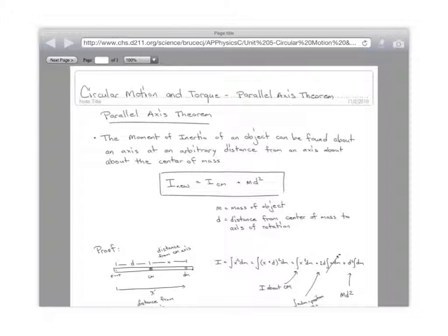No integration required. Once you know one moment of inertia about the center of mass, it's really easy to figure out the moment of inertia about any other axis that's parallel. Does that make sense?